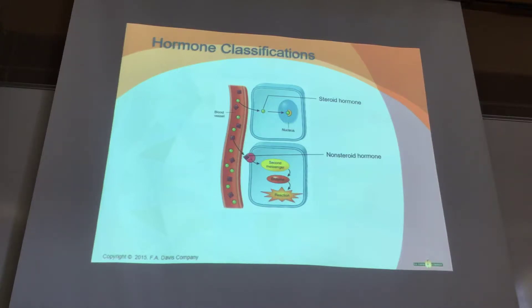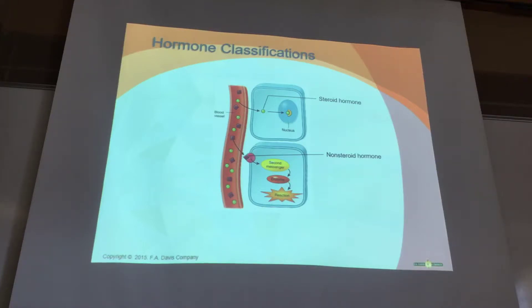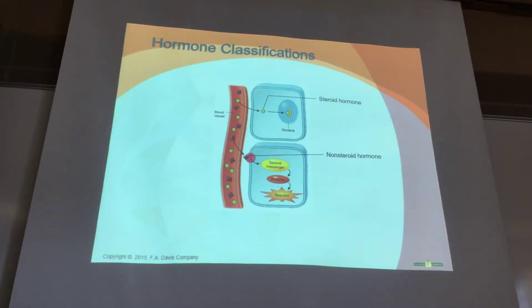All hormones come in two classifications. Steroid hormones are synthesized from cholesterol—they're lipid-based, or fat-based. Non-steroid hormones are synthesized from amino acids, making them protein-based. Because steroid hormones are lipid-based, like the cell membrane, they can pass directly through the cell membrane without needing a receptor or transporter—going straight to the nucleus.